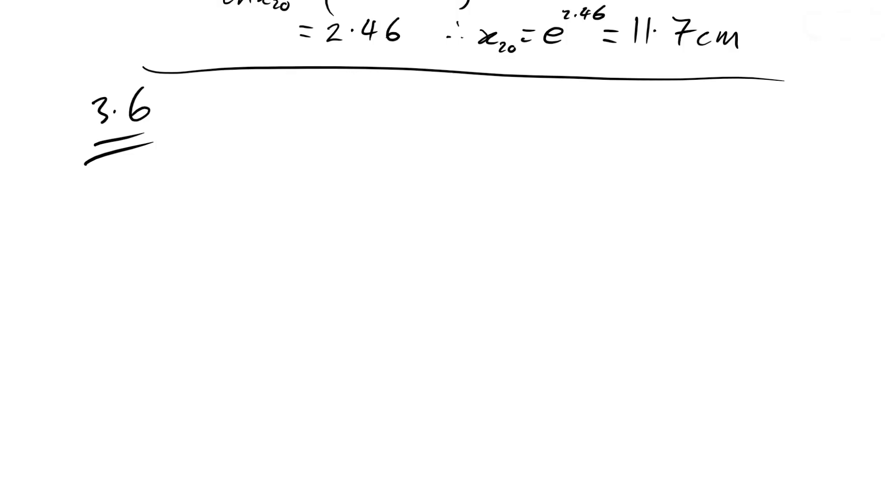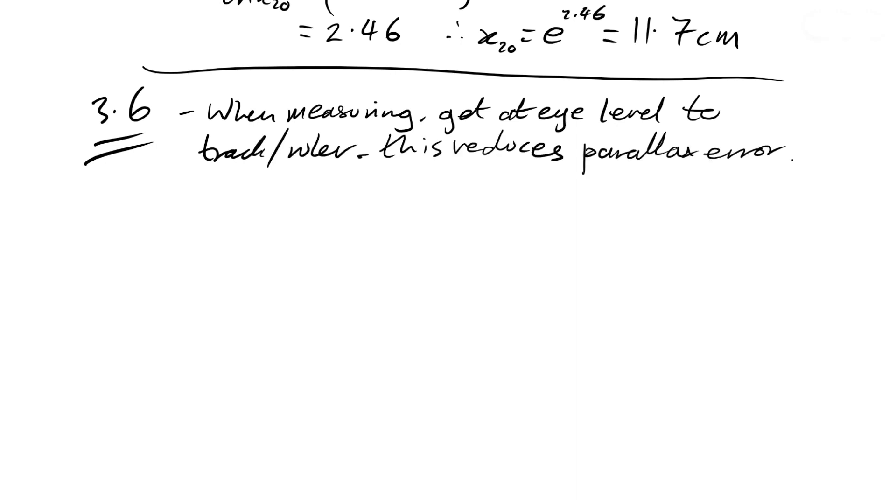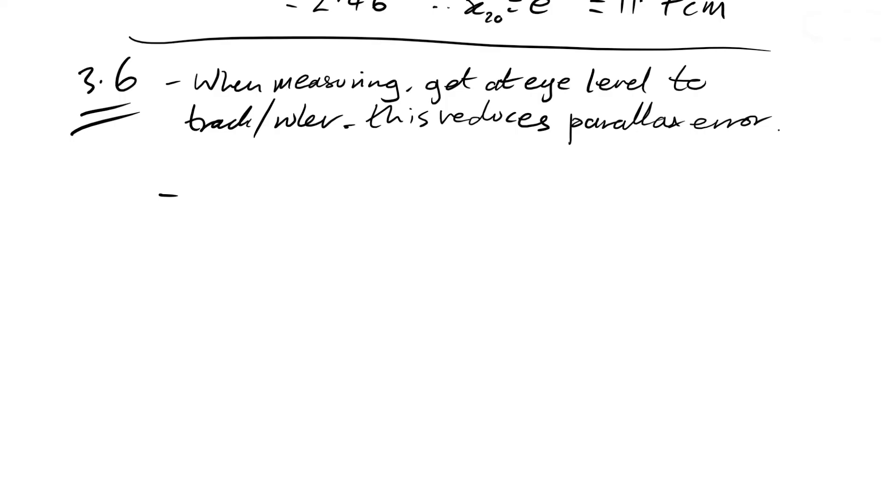And finally, we're just being asked what could we do to reduce the uncertainty in the measurements of p. So first thing is: when measuring, get at eye level to track and ruler. This reduces parallax error, always a classic one whenever you're doing any measuring with a ruler of any kind. Always try and reduce parallax error. What could we say then? Well, another classic one is obtain repeat readings to calculate mean from.